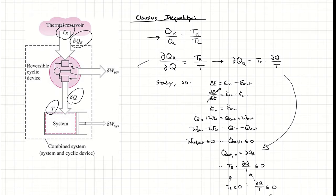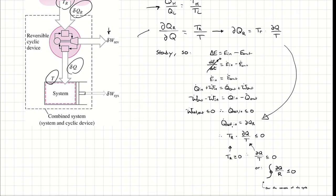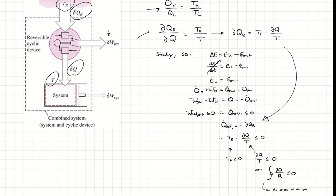The reason we're writing this as a δ or delta is because I want these terms to refer to over the course of an entire cycle's operation — it might be outside, it might be inside. The delta is indicating we're talking about the change over the course of that entire cycle. Since this cycle is operating steadily, I can apply my energy balance and simplify it for a steady-state operation of a closed system because I have no mass crossing my boundary.